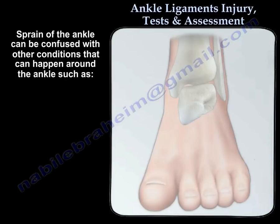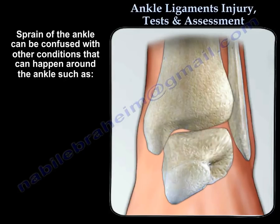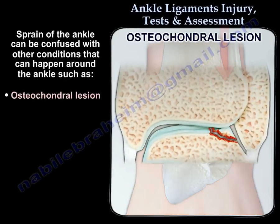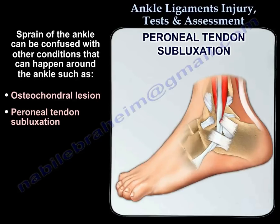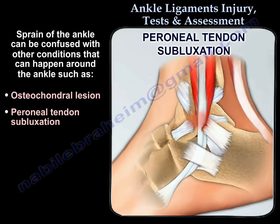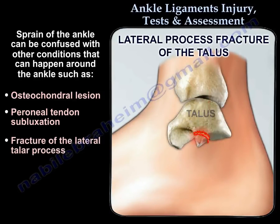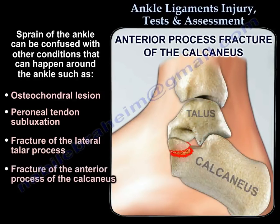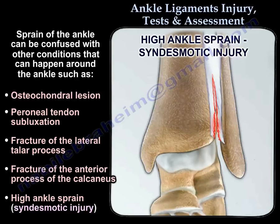A sprain of the ankle can be confused with other conditions that can happen around the ankle, such as an osteochondral lesion, peroneal tendon subluxation, fracture of the lateral talar process, fracture of the anterior process of the calcaneus, or a high ankle sprain, which is called a syndesmotic injury.